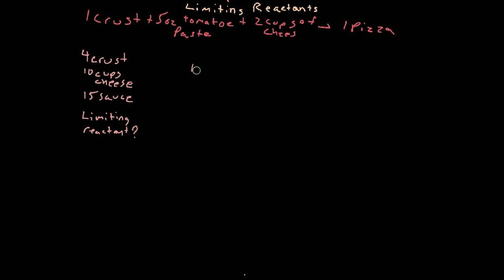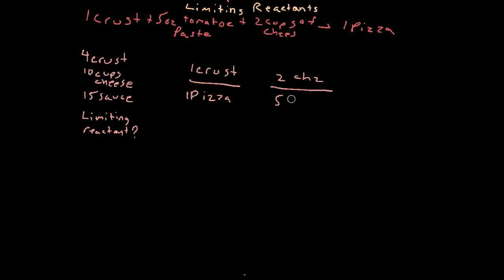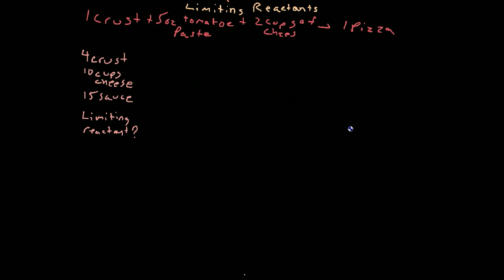For every one crust, there's one pizza. For every two cups of cheese, there are five ounces of tomato sauce. All of this stuff is interchangeable in this balanced equation to make a pizza. Limiting reactants use those relationships to find out, given a list of ingredients or compounds in a balanced equation, which one is limiting the reaction from happening.